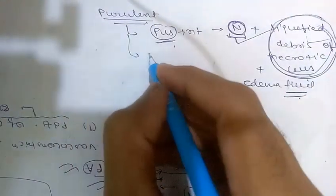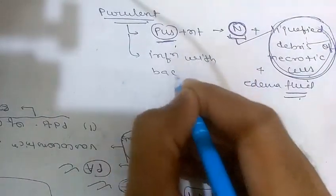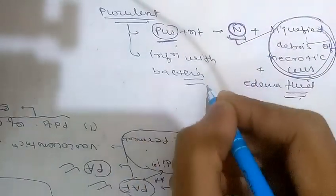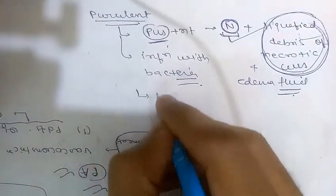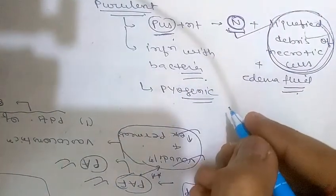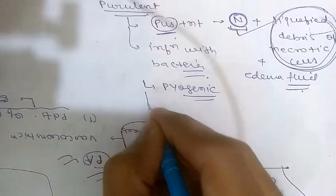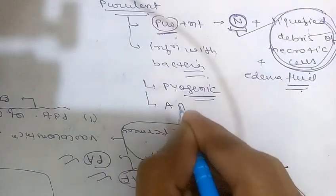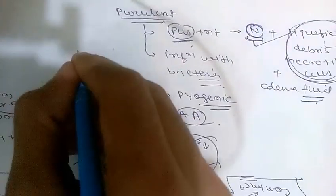The frequent cause of purulent inflammation is infection with bacteria that cause liquefaction, such as Staphylococcus. These pathogens are also referred to as pyogenic bacteria because they are pus-producing. A common example of acute purulent inflammation is acute appendicitis.